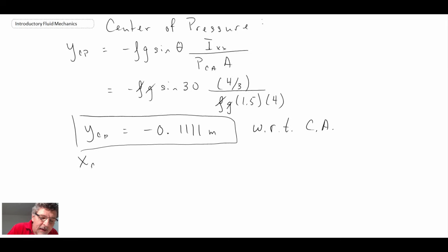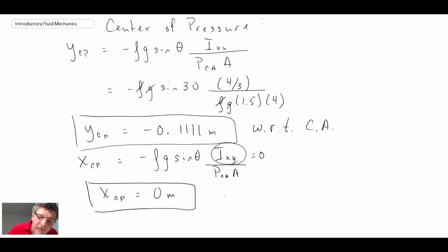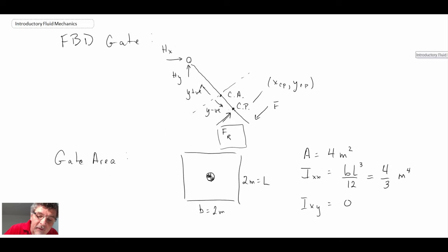And for XCP, this is an easier one, but I'll write it out explicitly anyways. We have IXY over PCA times A. And we found that IXY was equal to 0 because the plate is symmetric. And consequently, XCP is equal to 0 meters. That is with respect to the center of area. That just means that it's at the same location as the center of area for the y-coordinate. So we've now determined where the force is acting. We figured out that it is located here, 0.111 meters below the center of area.